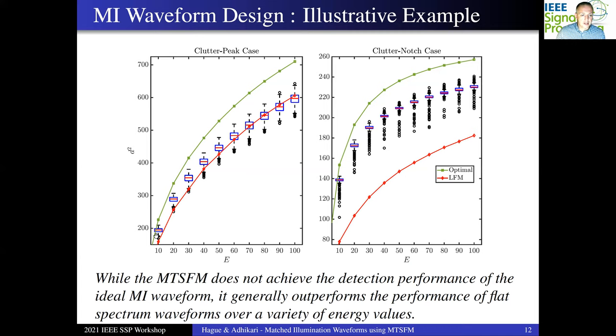Let's take a look at the clutter peak first. So for low transmit energies, on average, the multi-tone SFM, while it can't quite meet the detection performance of the ideal MI waveform, it's certainly outperforming a flat spectrum shape. So it's better than just placing energy equally across the band. As we increase the transmit energy, though, the performance of the multi-tone SFM trends a little downward. In fact, on average, it's not doing quite as well as the LFM, though there are a few outliers that still will outperform the LFM.